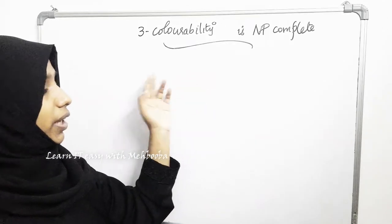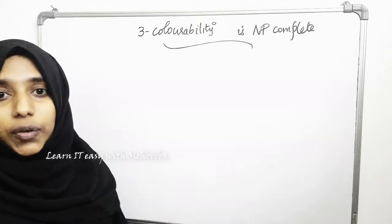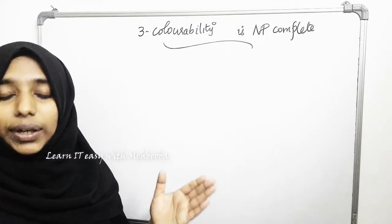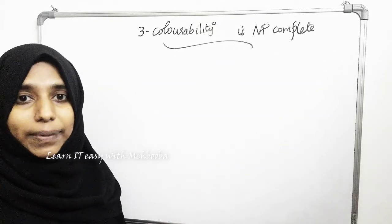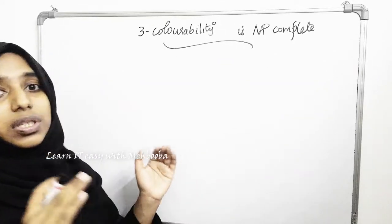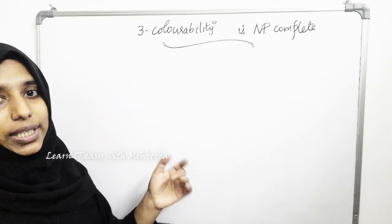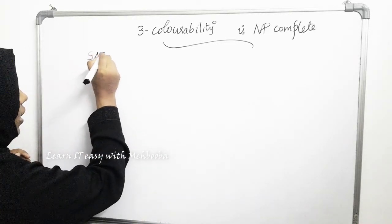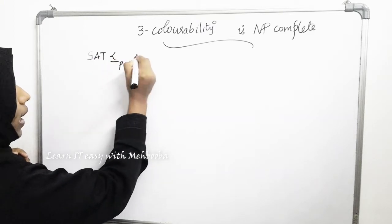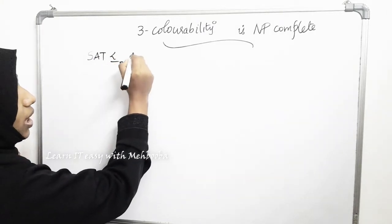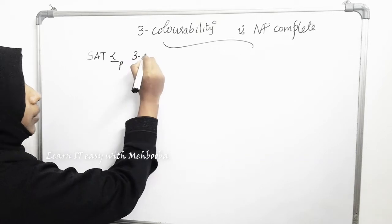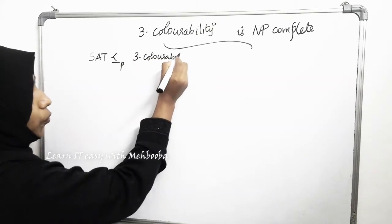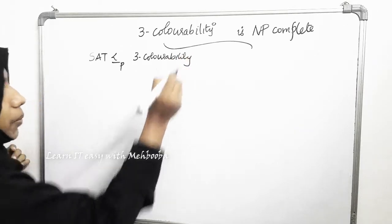We now have to prove that 3-colorability is NP complete. What we will do is take an algorithm that has already been proved to be NP complete and reduce it to 3-colorability. We will take the SAT problem, which has already been proved to be NP complete by Cook and Levin, and reduce it to 3-colorability in polynomial time. That will prove that 3-colorability is NP complete.